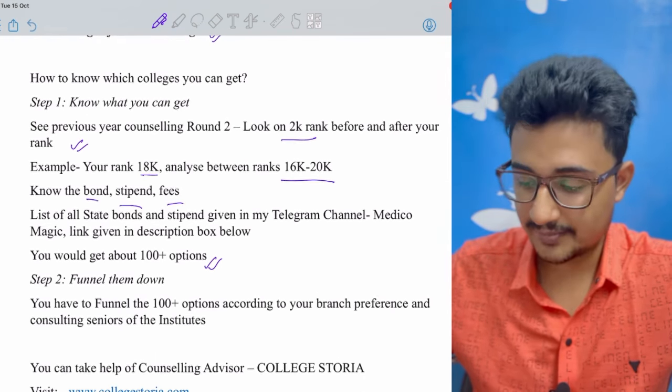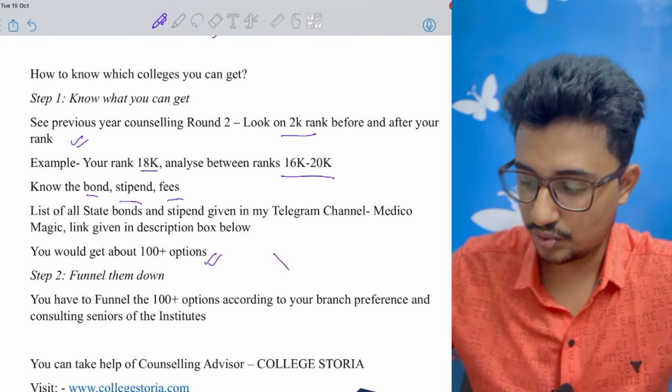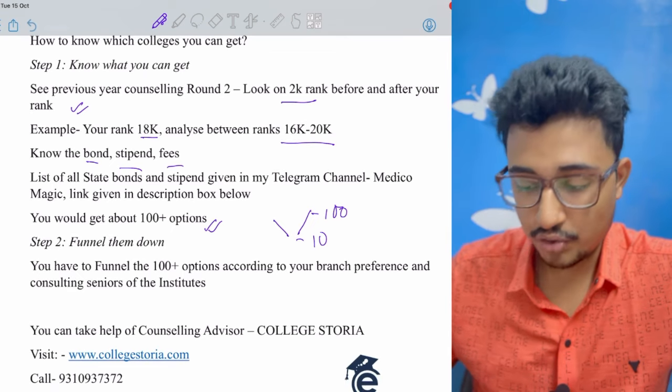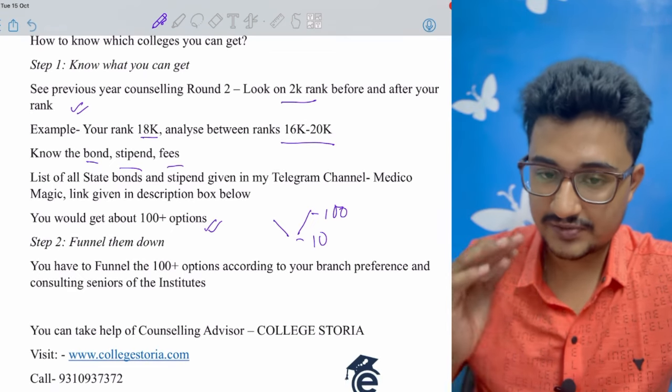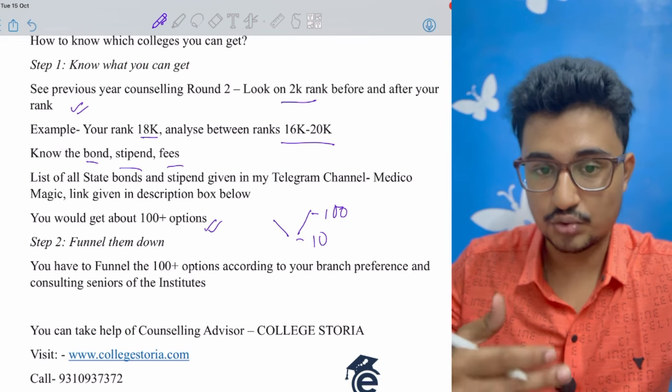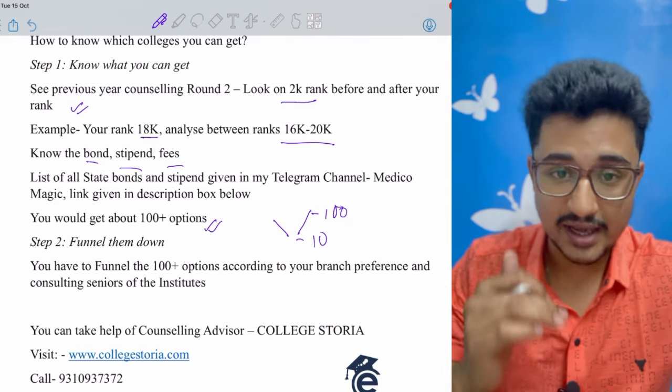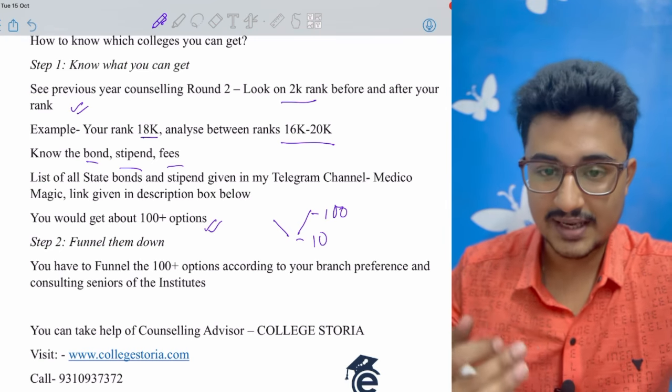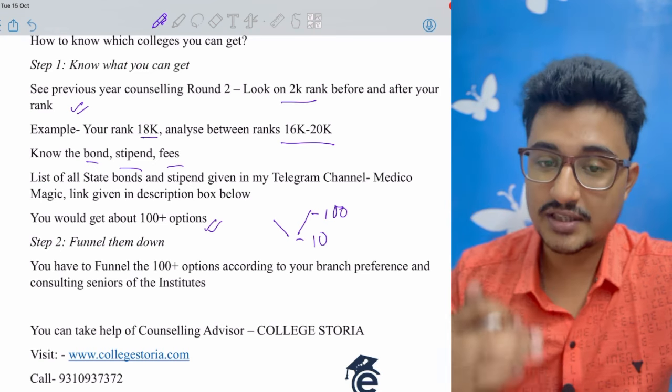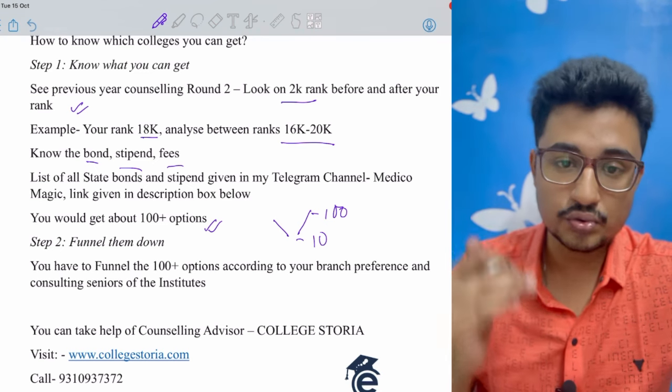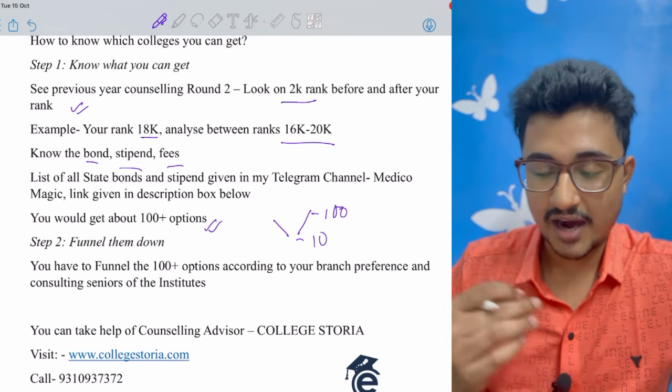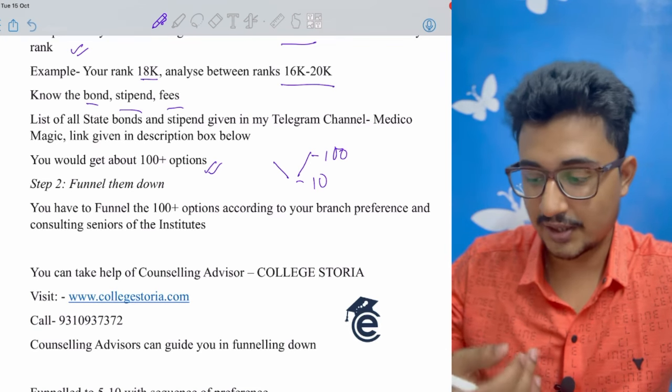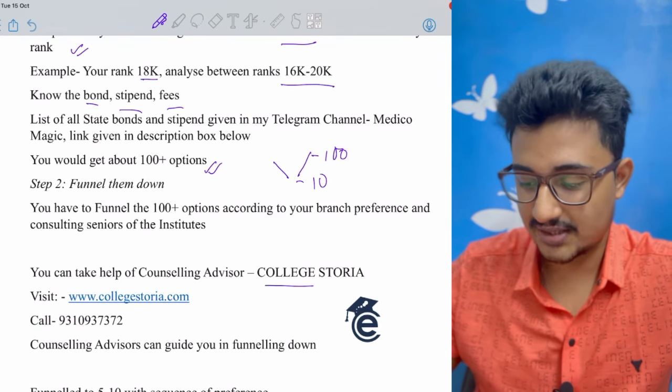Step two is funneling them down - funneling the 100 options into maybe from 100 you funnel it down to 10. How to funnel it down? You contact your seniors of that college. If you are having any senior in that particular state, you contact them, they would provide the number of that college or institute senior. You talk to them, you know the work culture, how is the hands-on. From that you are going to know how the department is like. After that you can easily funnel from 100 options to 10 options.